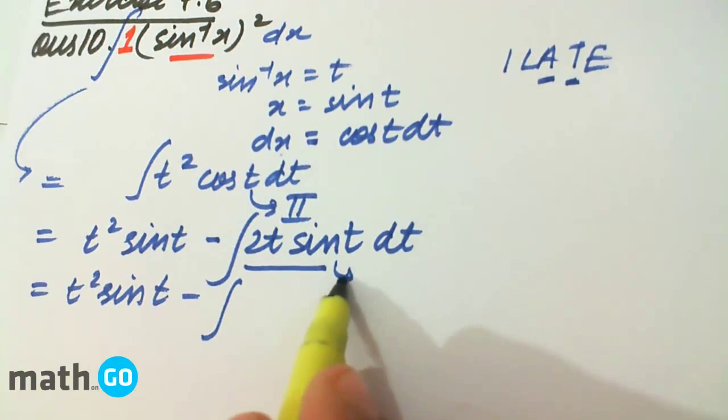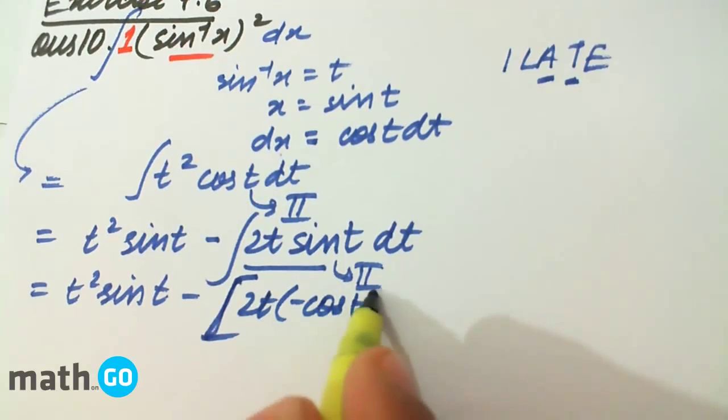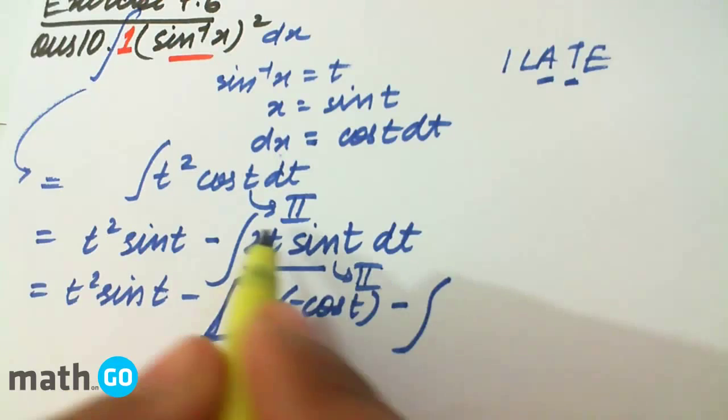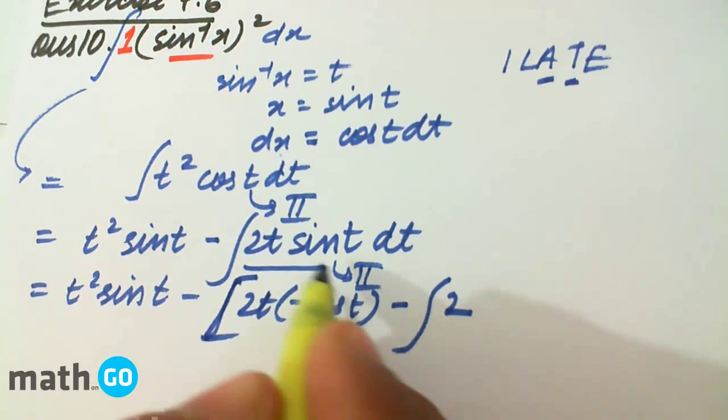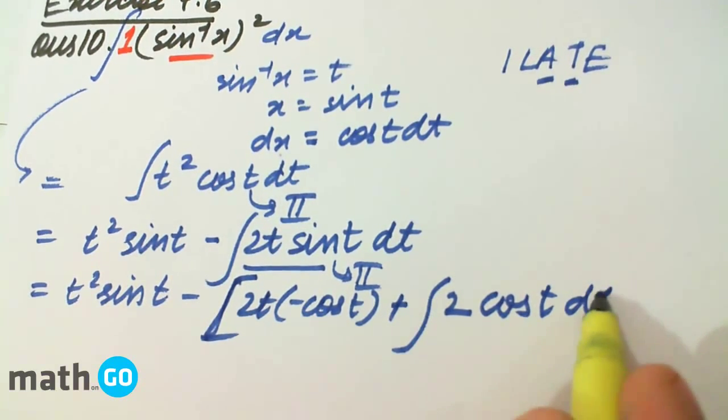Again this is the second function because it is the trigonometric function. So we get 2t into this integral is minus cos t, minus of integral of this derivative, that is 2 into this integral, that is minus cos t plus cos t dt.